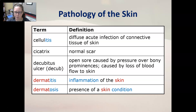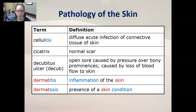A decubitus ulcer, or decube, is an open sore caused by pressure over bony prominences. It is caused by the loss of blood flow to the skin. It is often referred to as a bed sore, and people get them from lying in the same position in the bed for too long.